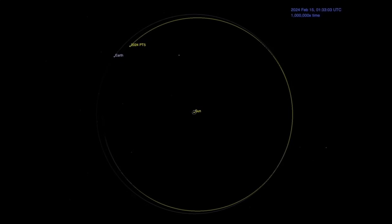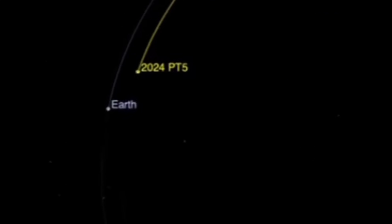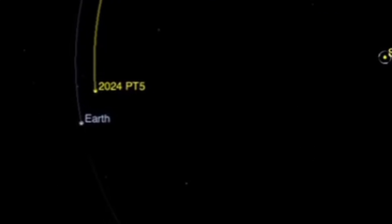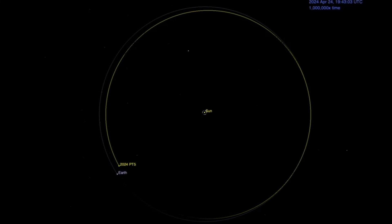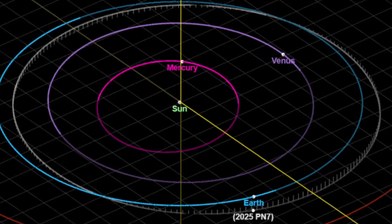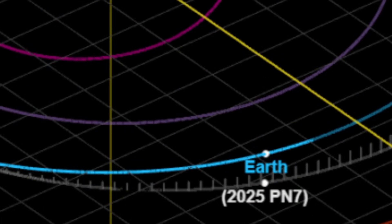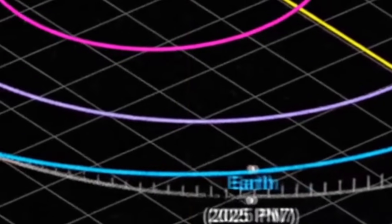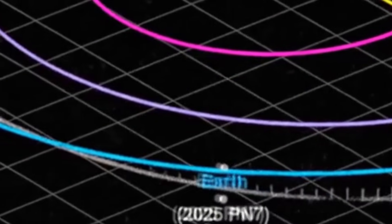For example, a body called 2024 PT5 became a temporary captured object near Earth for a few months. What makes 2025 PN7 special is that it appears to be one of the more long-lived companions of this type.